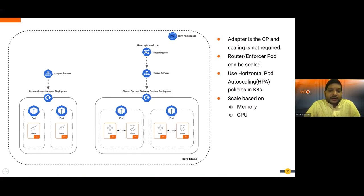You can scale the gateway runtime deployment to scale router and enforcer in parallel — a key advantage. Since the adapter is the control plane, scaling it is not typically required. You can scale the gateway runtime deployment to achieve any TPS values needed, using horizontal pod autoscaling policies based on CPU, memory, and so on.